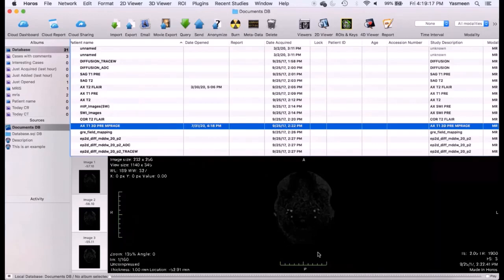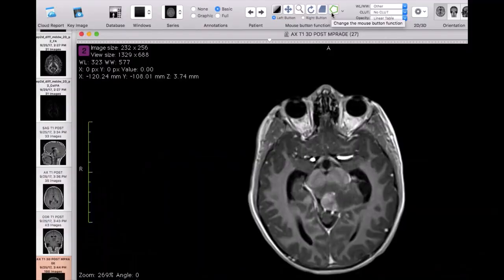Select the album which will display the image sequences shown. Select the desired MRI series and a 2D volume window will open. This image series can be scrolled through and viewed until the tumor is visualized.